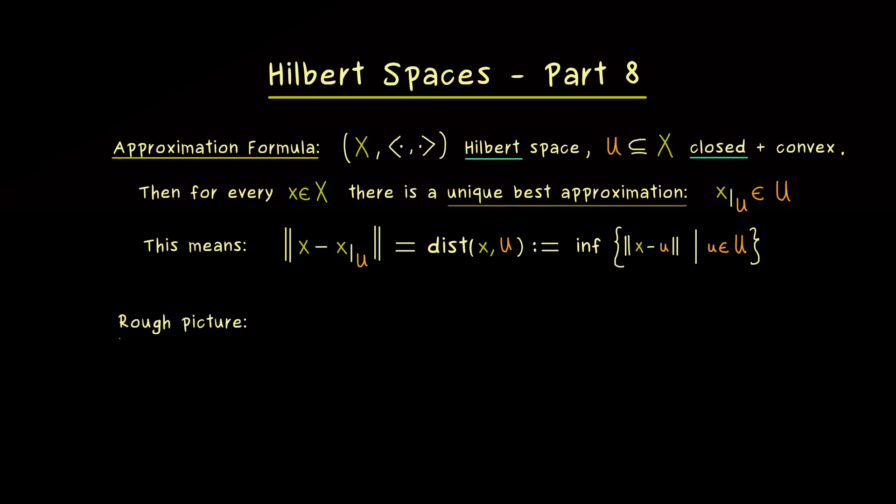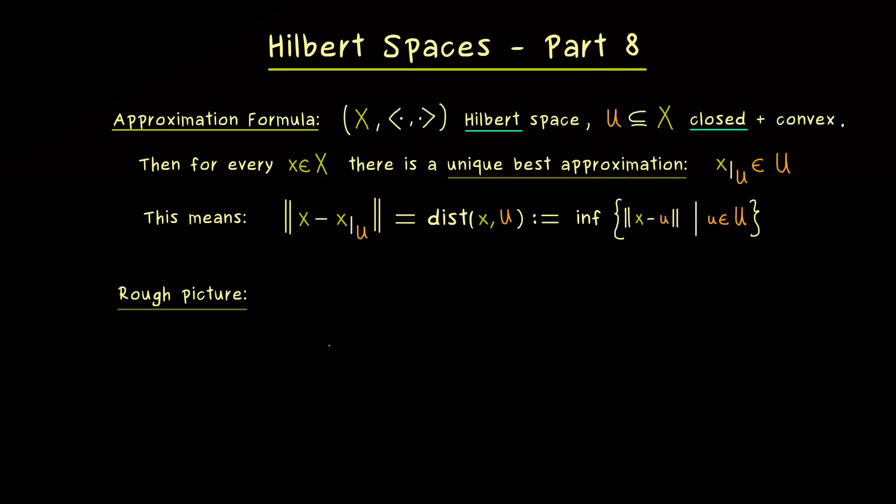And I would say for the whole video, it's good to have a rough picture in mind. Just imagine that we have our vector x here. And in order to make it simple, let's represent our subset U by a line. Indeed this would be the visualization when we have a subspace. And now the minimal distance is what we would find here. And the claim of the approximation formula is that this one is given by a difference vector. Hence our special element is what we find here inside U. So this vector is our unique best approximation.